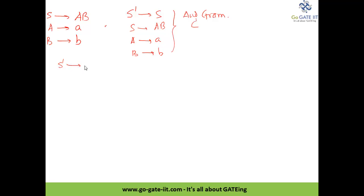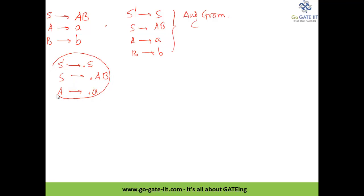We start with S' → •S. With the dot before S, we consider the S-production: S → •AB. Now the dot appears before A, so we consider A and place the dot: A → •a. This makes the very first state of the DFA, which we call I0. Note that we are not including B → •b in I0 because the dot is placed before A, not before B. If we had a production S → •B then we would include B → •b. So this is I0.